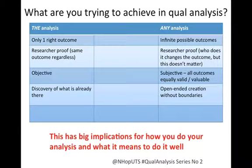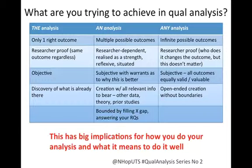What we might have here is a scenario of very open-ended creation without boundaries. It doesn't mean it's completely open — you couldn't analyze something completely contrary to your data — but very few limits are set on what you can do. These are slightly artificial scenarios at either extreme. What I'm going to suggest is that for many people, and most of the research I've done, you're really looking for an analysis which sits between the analysis and any — suggesting more than one possible valid outcome, but not infinite numbers.